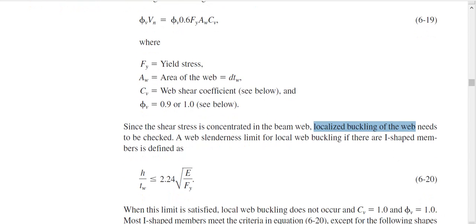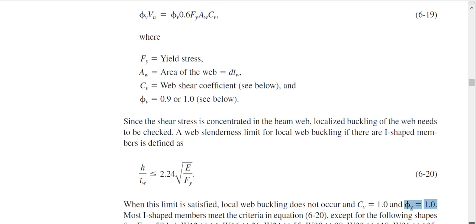This equation will take care of the web slenderness. That means if our web is long and thin or not, it will take care of this. H means the height of the web. TW means the web thickness. If the ratio is less than this, then it's good. It's good means Cv is 1. Phi V is 1. That means if this condition satisfies, my Cv and phi V both are 1. Good news is that most of the section in your AISC manual satisfies this.